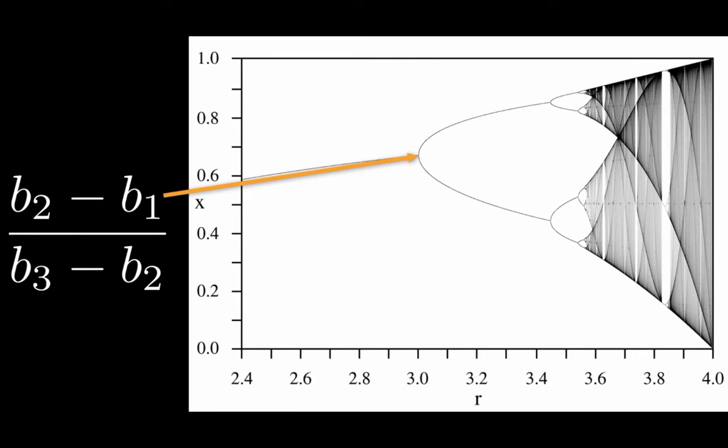where b1, for example, is the r-value where the dynamics bifurcate from a fixed point to a 2-cycle. Similarly, b2 is the r-value where the dynamics bifurcate from a 2-cycle to a 4-cycle, and so on.